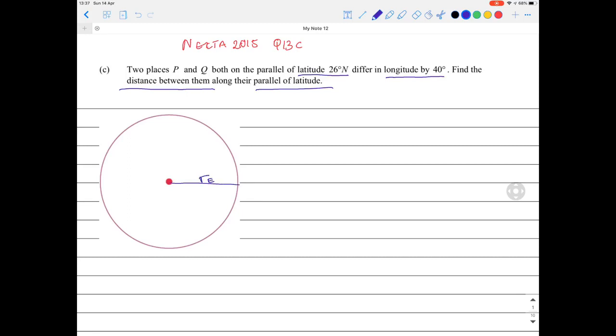Draw the radius of the earth, let's call that r_E. Obviously we have an equator here - that's your equator. We know the equator is at zero degrees, and P and Q are on the parallel of latitude 26 degrees north.